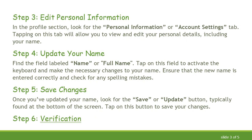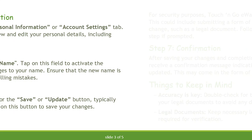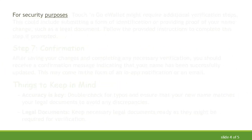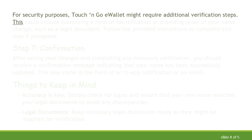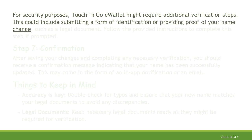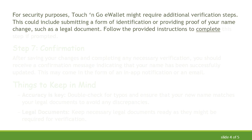Step 6: Verification. For security purposes, Touch&Go eWallet might require additional verification steps. This could include submitting a form of identification or providing proof of your name change, such as a legal document. Follow the provided instructions to complete this step if prompted.